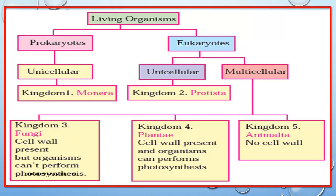Monera comes under unicellular prokaryotes, whereas kingdom 2, Protista, consists of unicellular eukaryotes. All the multicellular eukaryotes are either kingdom 3 fungi, kingdom 4 plantae, or kingdom 5 animalia.